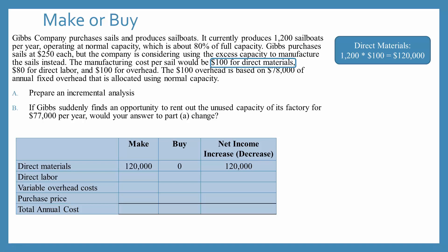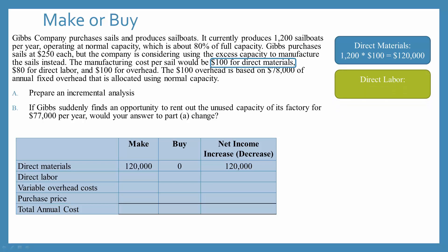Next we can find our direct labor. If we go back to the paragraph, it tells us that our direct labor costs are $80 per sail. And so to find our total labor costs, we take our $80 per sail times the 1,200 sails to determine the total labor would be $96,000.